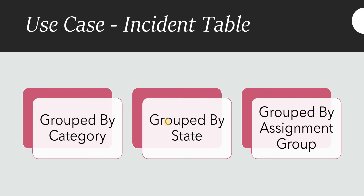We will be creating a report on the incident table which would first be grouped by category. Then when we further click on a category, it should show another report grouped by state — this is our first level of drill down. The second level of drill down would be grouped by assignment group, showing the next report based on assignment group.